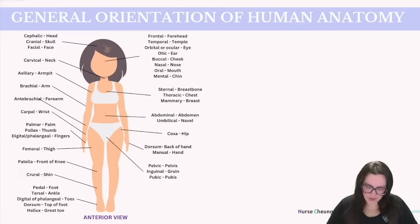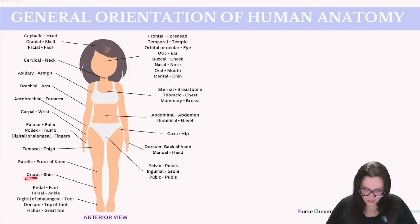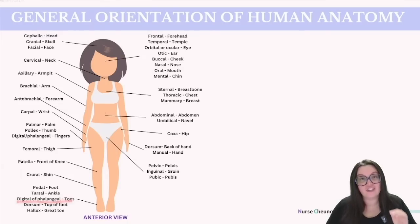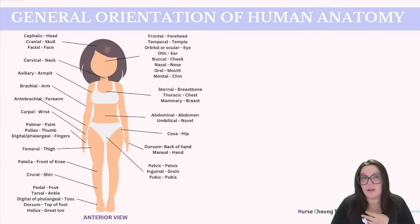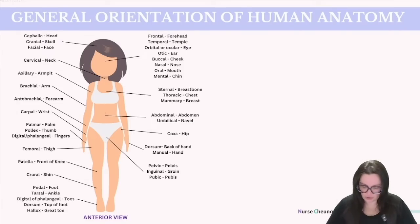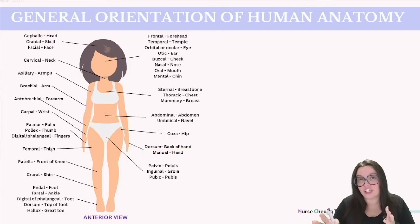For our anterior view, we're going to move from our hips all the way down. We have coxa for our hip; femoral for our thigh; patella, which is the front of our knee; crural, which is our shin; pedal for our foot; tarsal for our ankle; digital or phalange stands for our toes. Dorsum really means the top of or the back of — so you can have the dorsum of your foot or the dorsum of your hands. Hallux stands for our great toe, and dorsum also stands for the back of our hand, used interchangeably.